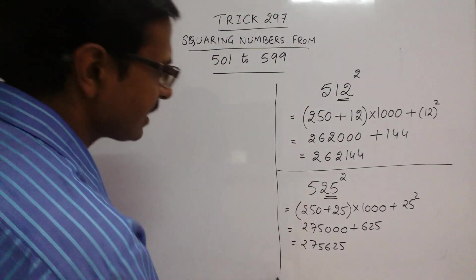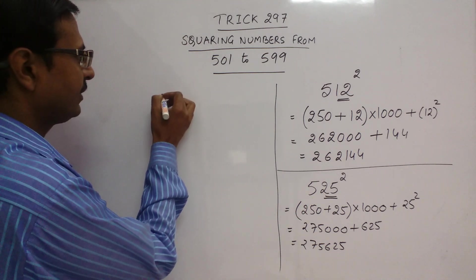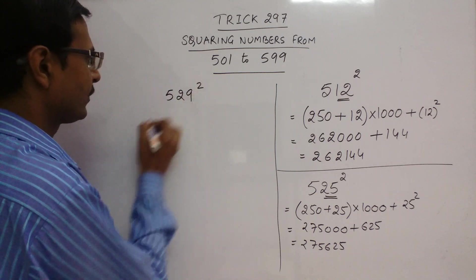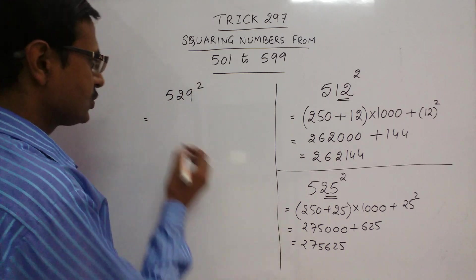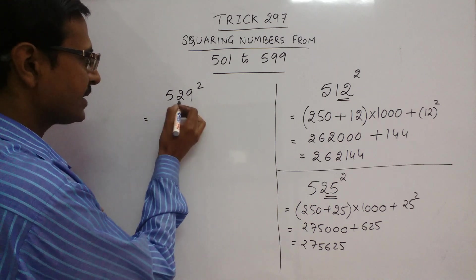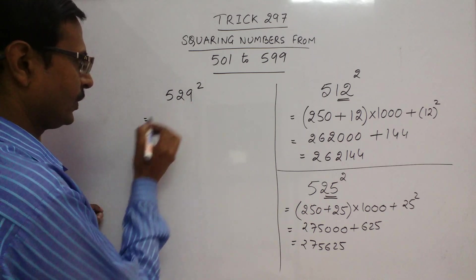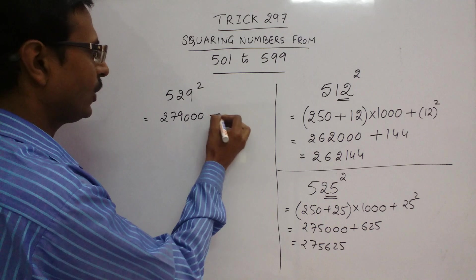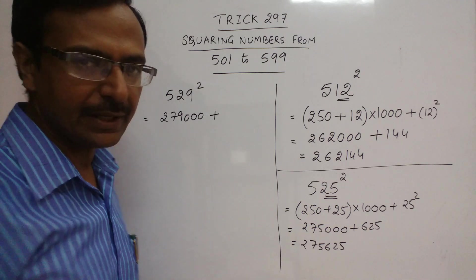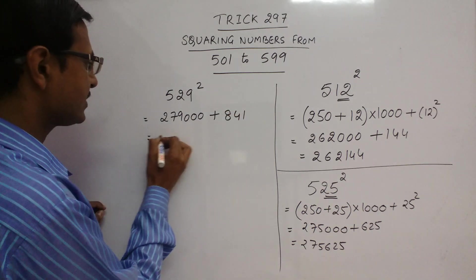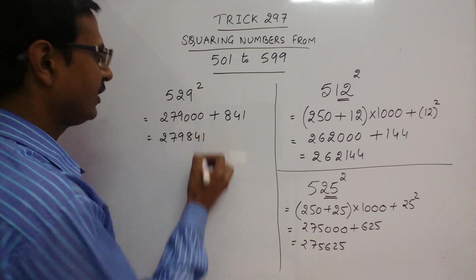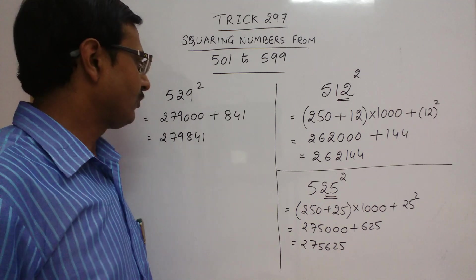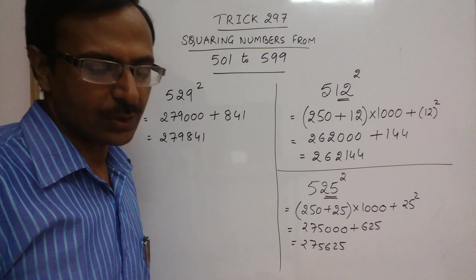You can take more such examples. Say we have 529 square. I will reduce the number of steps now. 250 plus 29 is 279 followed by 3 zeros. And you need to know the square of 29, it is 841. So the answer for this question is 279,841, which is the exact answer you will get even by traditional method or by calculator.